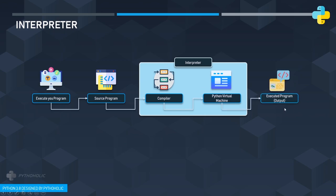You might ask how the Python virtual machine knows which operation you're going to perform or if there's a separate module you're using. It extracts all the information from the libraries, and if you haven't installed any required library it will throw an exception. The PVM uses libraries and modules to provide the instructions needed for the execution of your program.